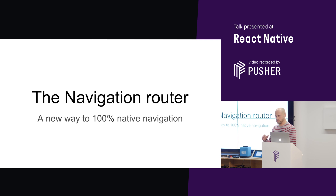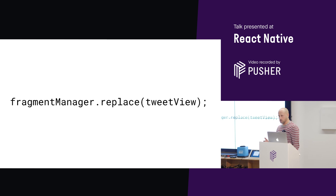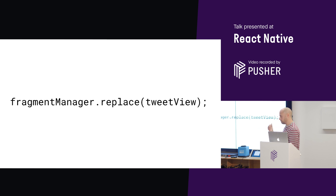What do I mean by 100% native navigation? I mean that it uses the same native navigation APIs that you'd use if you were building a native app without React Native. So let's have a look at what these native navigation APIs look like, starting with Android. If we're building an Android app without React Native, then we use classes called Fragments. These are Java classes. Each scene in our app would be represented by a fragment. So in a Twitter app, we have one fragment for the home view and another for the tweet view. When the user selects a tweet, we replace the current home screen with the new tweet screen by calling the replace method on the fragment manager.